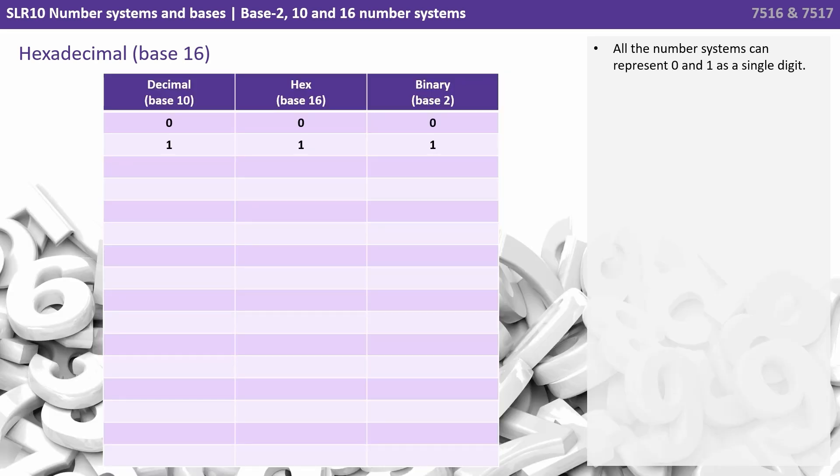So here's all the number systems now that we've shown you. Decimal base 10 on the left, hex base 16 in the middle and binary base 2 on the right. All these number systems can represent 0 and 1 as a single digit. From 2 onwards, the binary system begins to combine digits together to represent the numbers. So 10 equals 2.